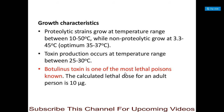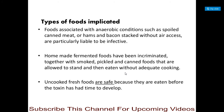Botulinum toxin is one of the most lethal poisons known — the calculated lethal dose for an adult person is 10 micrograms. Foods involved are those associated with anaerobic conditions, for example spoiled canned meat, hams and bacon stacked without air access. Homemade fermented foods, along with smoked, pickled, and canned foods allowed to stand and eaten without adequate cooking, are also implicated. Uncooked fresh foods are safe because they are eaten before the toxin has time to develop.